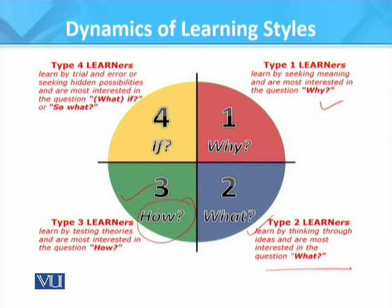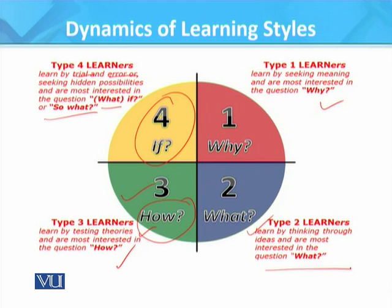Type 3 learners are thinking and doing learners. They learn by testing theories and are most interested in the question 'How?' They like hands-on experience and want to apply what they learn to new situations, asking: 'How do I use this information?' Type 4 learners are dynamic learners who create and then act. They learn by trial and error, seeking hidden possibilities, and are most interested in the question 'What if?' They perceive information concretely, process it actively, and want to see, hear, touch, and feel.